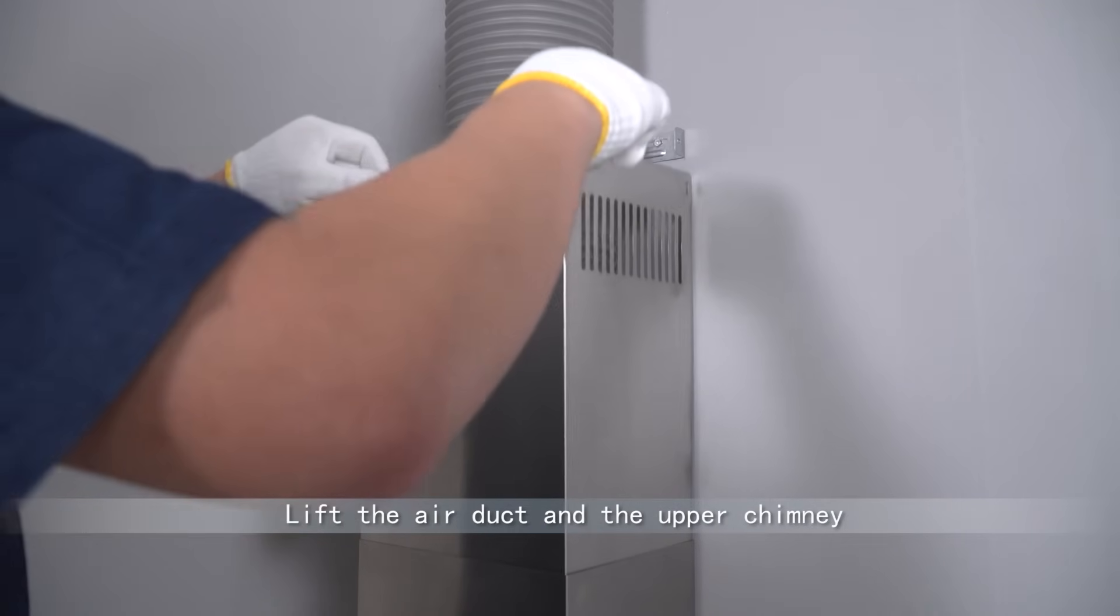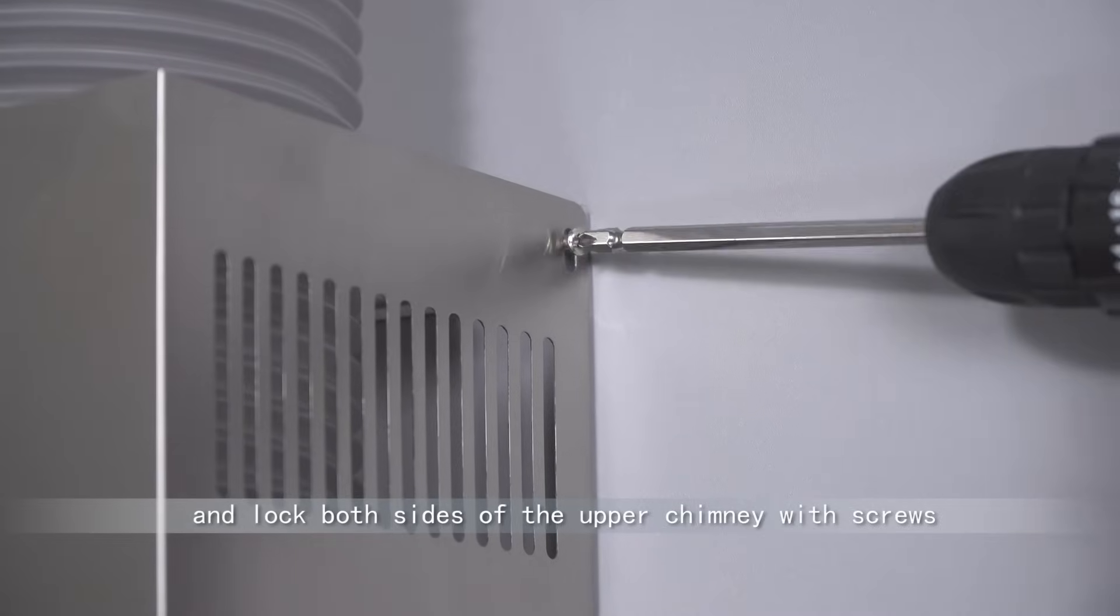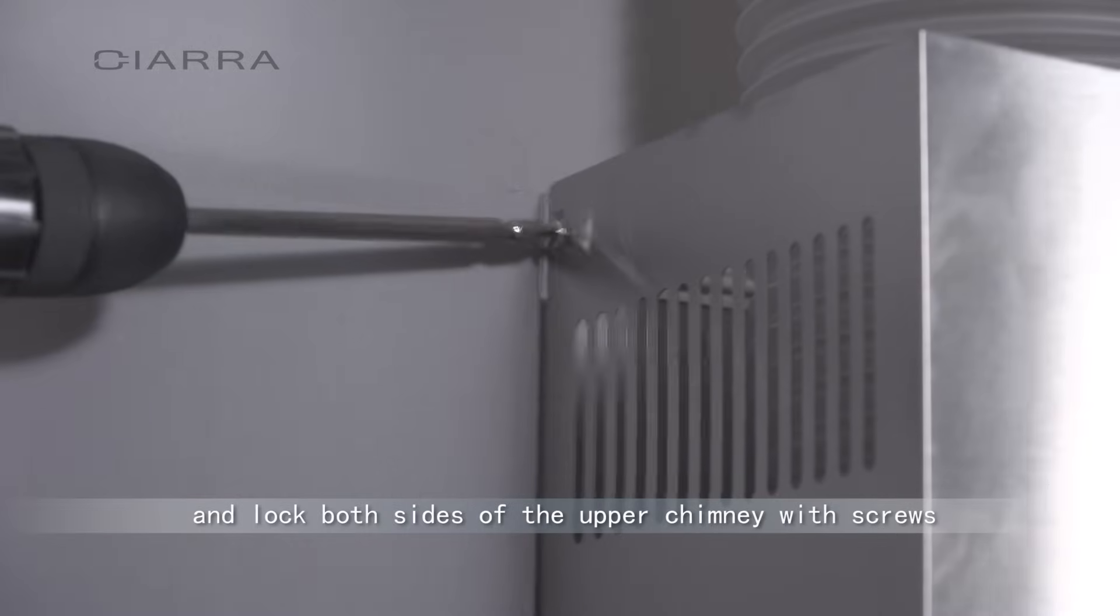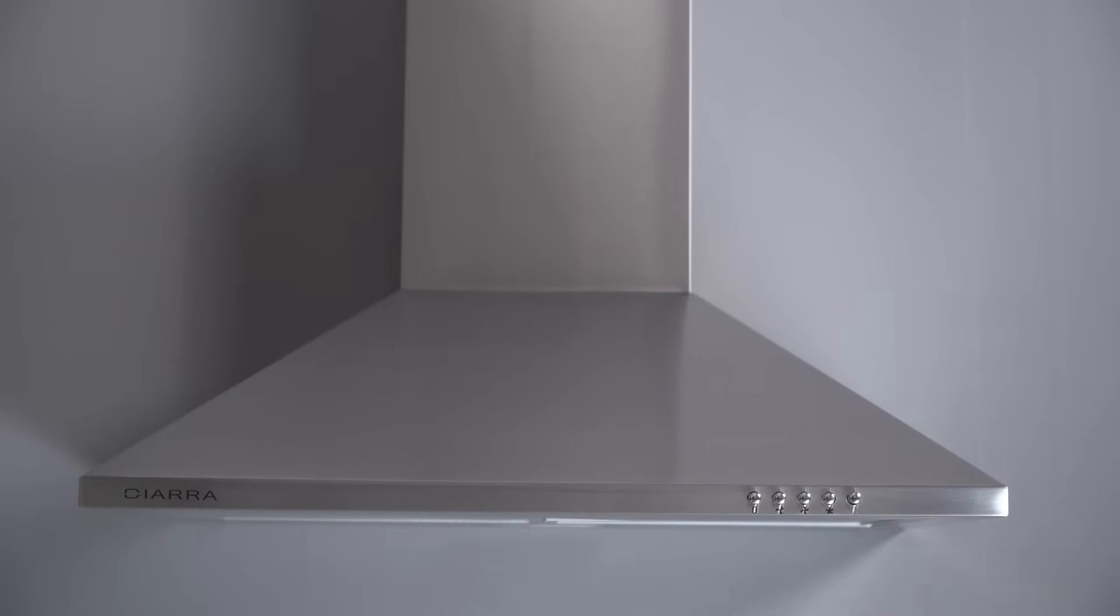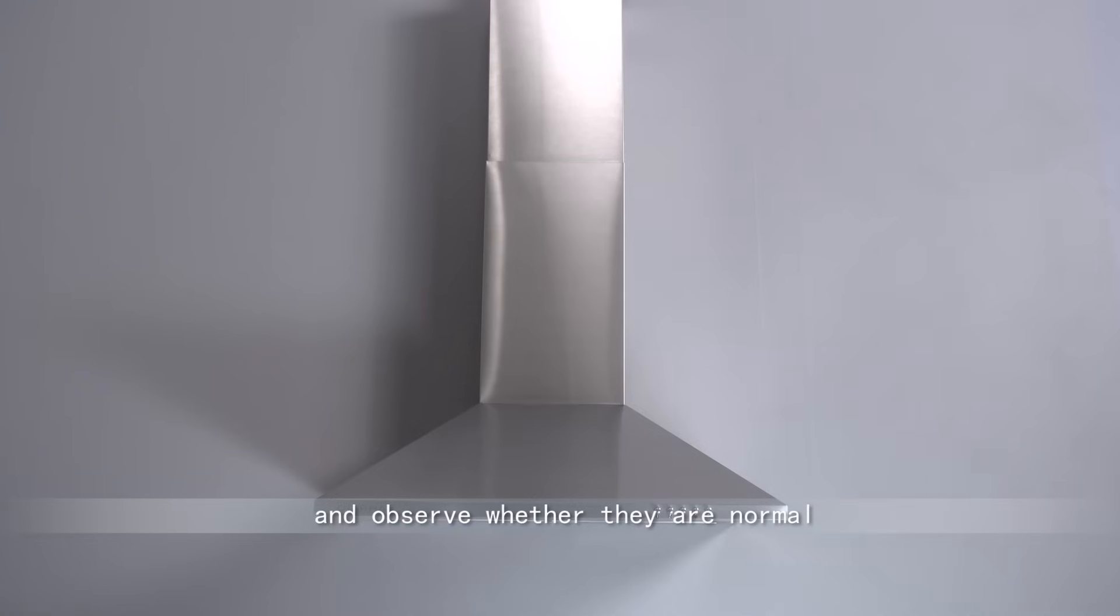Lift the air duct and the upper chimney. Lock both sides of the upper chimney with screws. Turn on all buttons one by one and observe whether they are normal. If there are no abnormalities, the installation is completed.